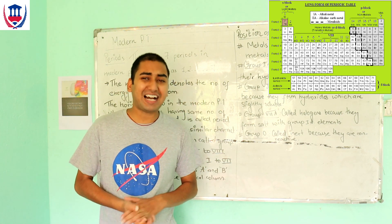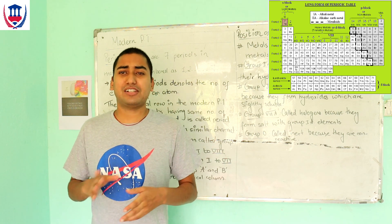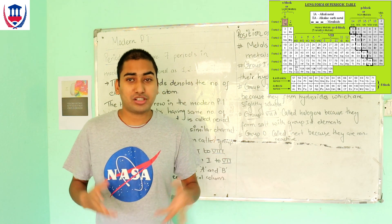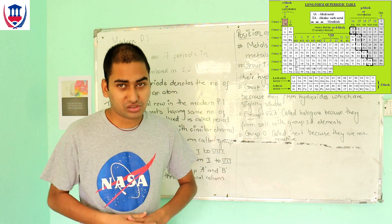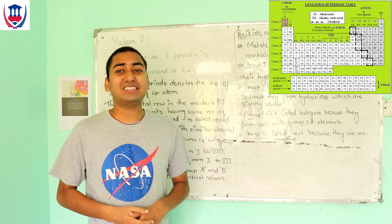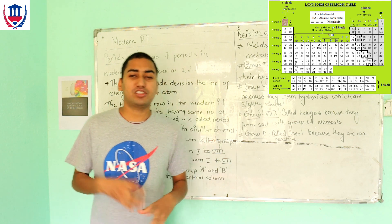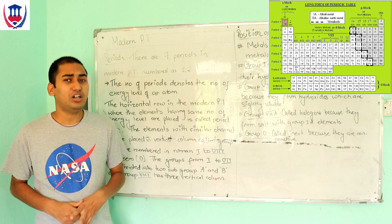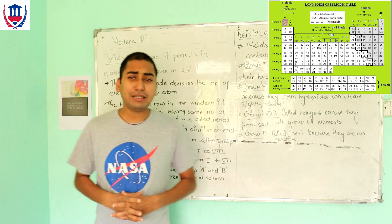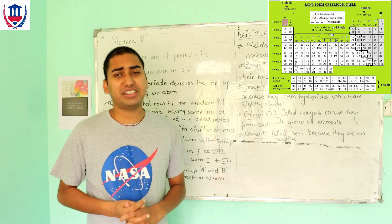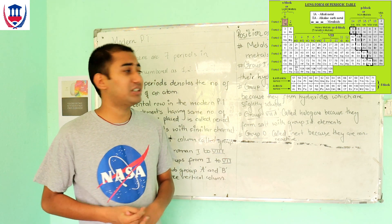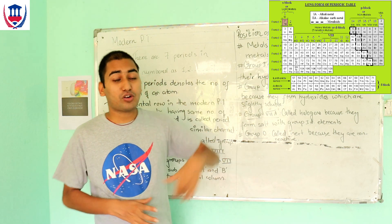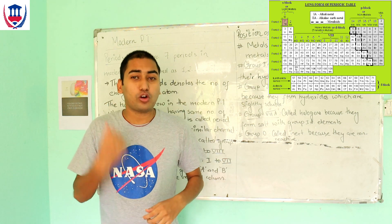In Group 1, there are highly reactive metals like sodium, lithium, and potassium, which are very reactive soft metals. This group is called Alkali Metals because their hydroxides are strongly basic.